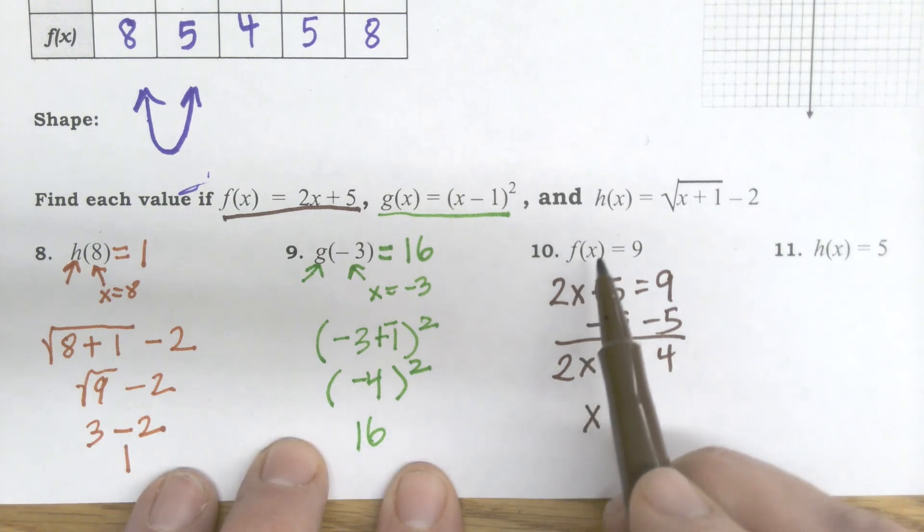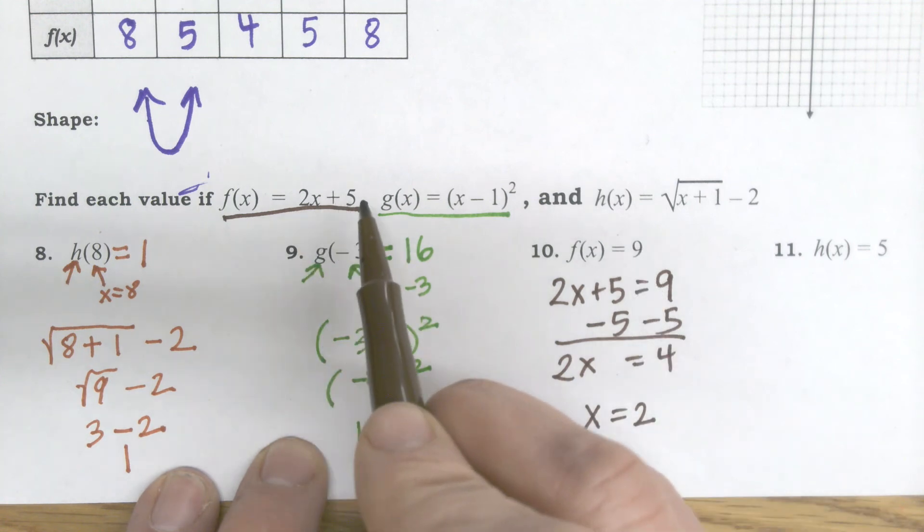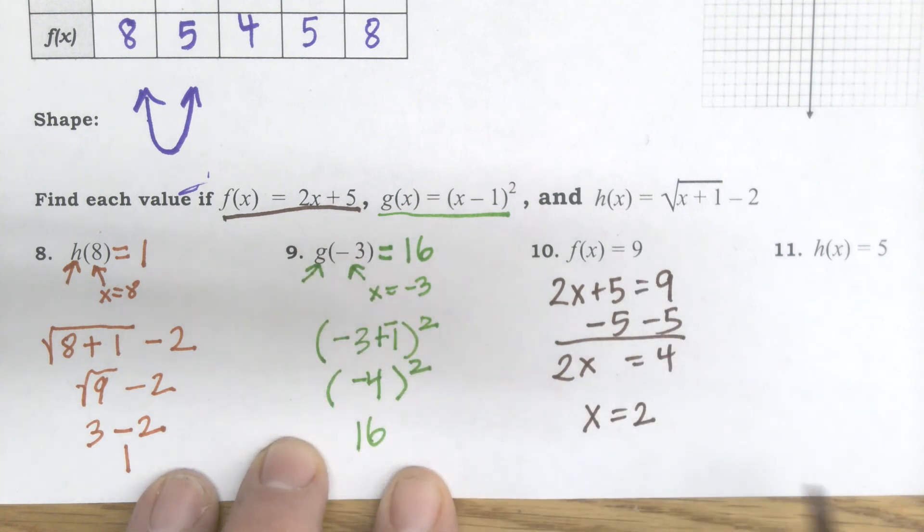That means if I plugged 2 in here, f of 2 would be 9. 2 times 2 plus 5 equals 9. And that's a true statement.